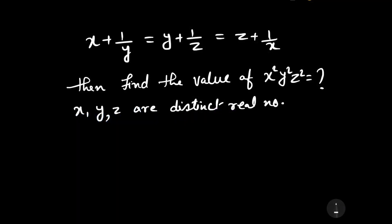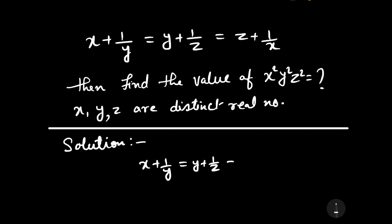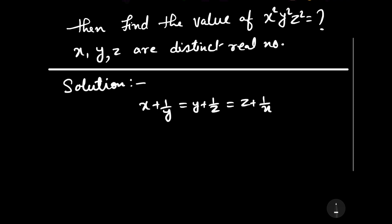Now let us start to solve this question. Our question is x plus 1 by y is equal to y plus 1 by z is equal to z plus 1 by x. We have to find the value of x squared, y squared, and z squared.